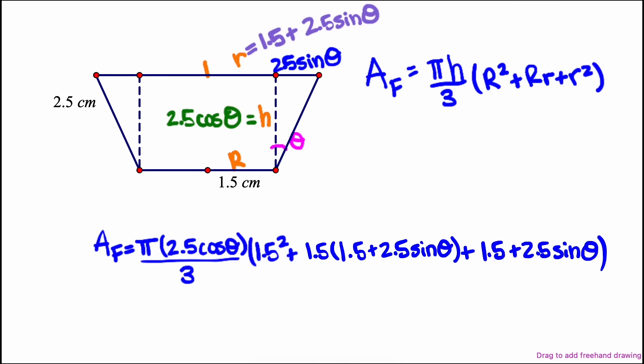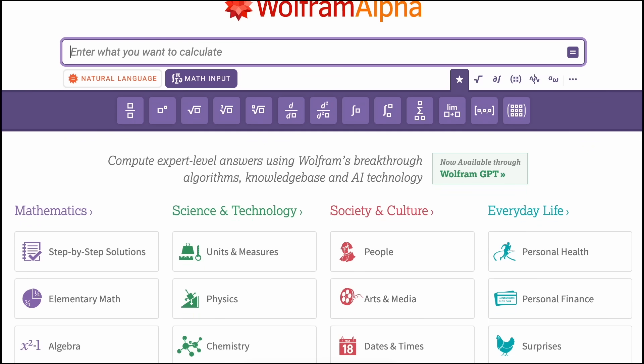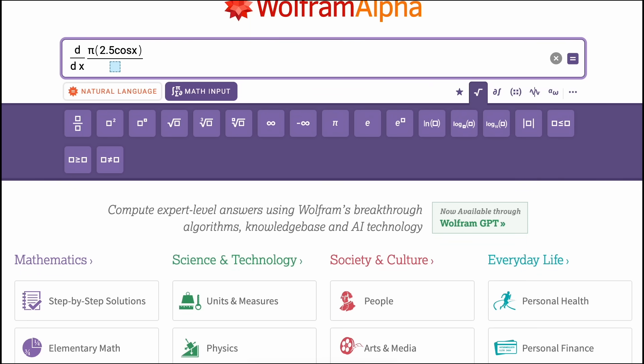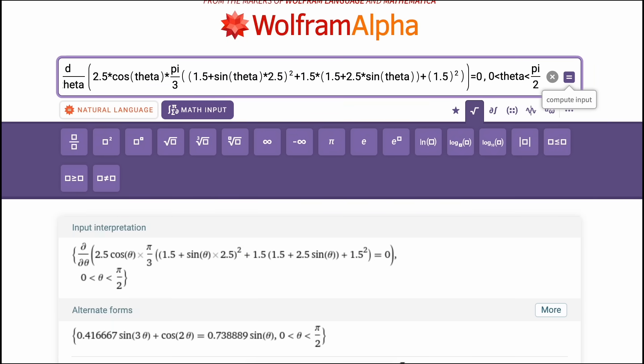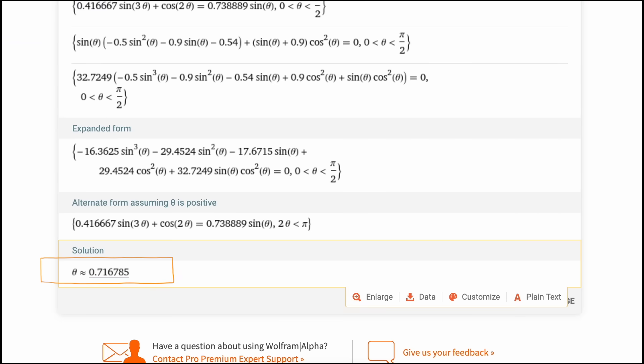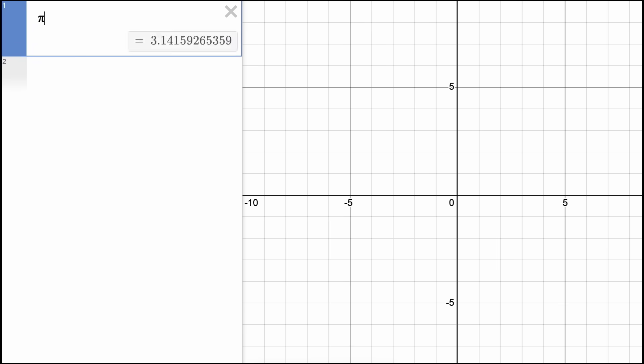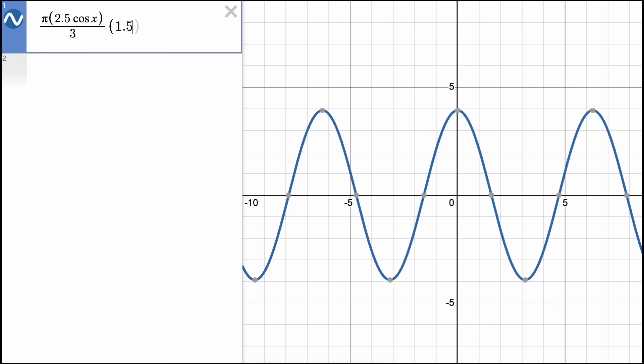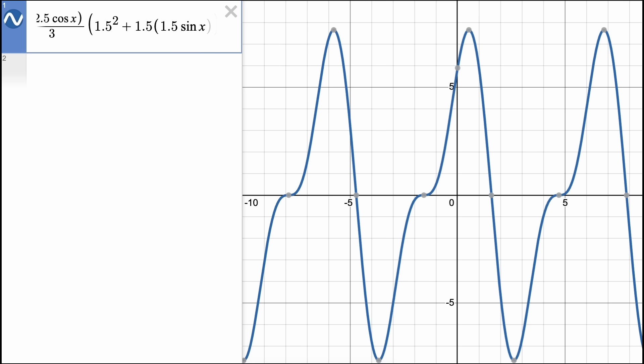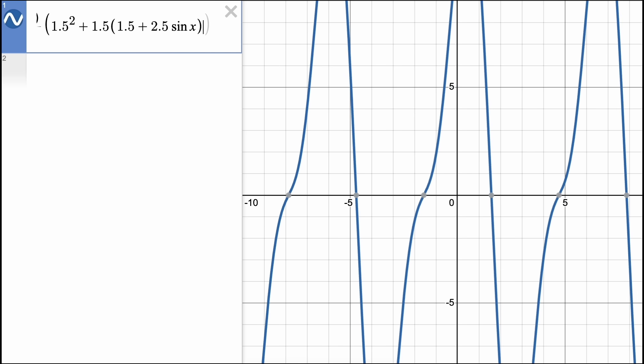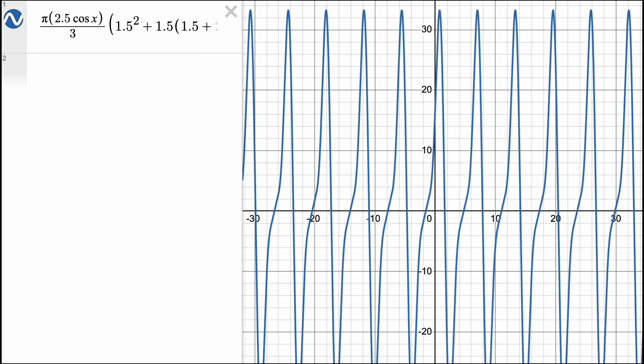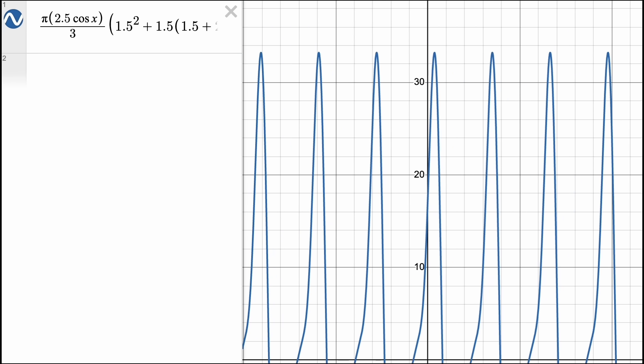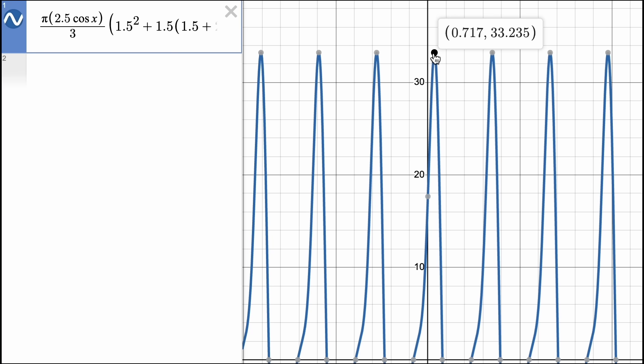To find the maximum volume, we have a couple of options. We can take the derivative with respect to theta, set the derivative equal to zero, and solve. Wolfram makes quick work of this. Or we could graph the function and have technology help us find the maximum. The graph shows us it's periodic and has many maxima, but our context tells us we want the maximum between zero and 90 degrees, or zero and pi-halves radians. Either way, we get a value of about 0.717 radians, which is about 41 degrees.